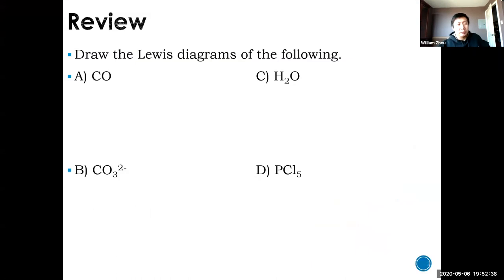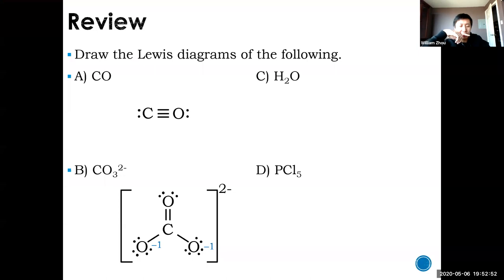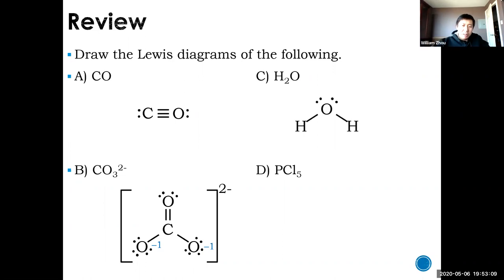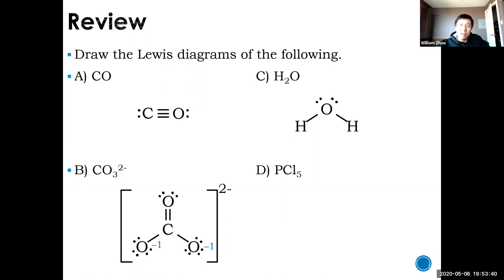For the first one, carbon monoxide is C triple bond with oxygen. The next one is carbonate, CO3 2-. Carbon is in the middle with three oxygens. The two oxygens with single bonds have a formal charge of negative one, and that's okay because the net charge is negative two — you have to have formal charge somewhere. Water is H2O, and the key thing to note is that you must draw water as a bent molecule. If you draw water as linear, I will mark it wrong, because water is not linear. The bond angle between the two hydrogens is not 180 degrees.